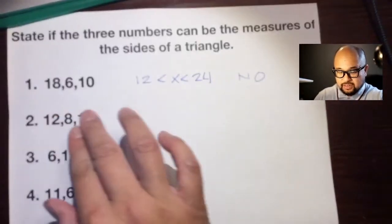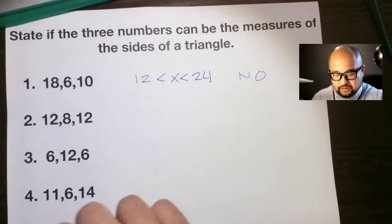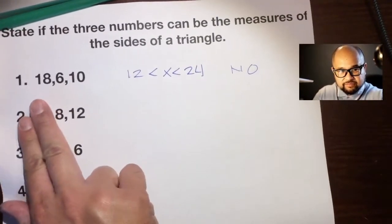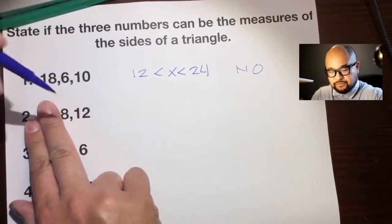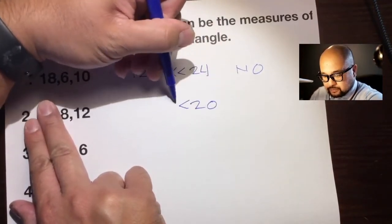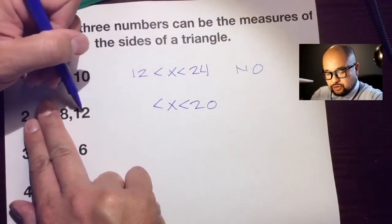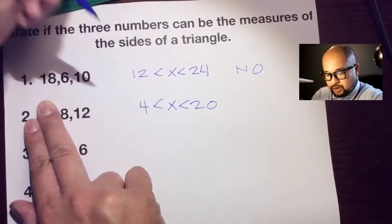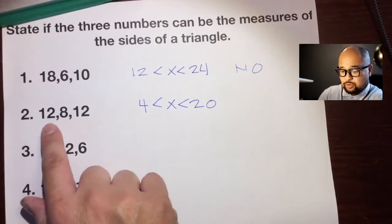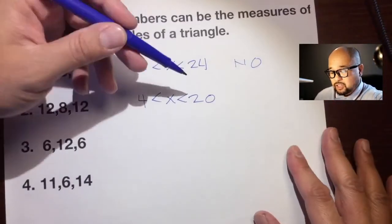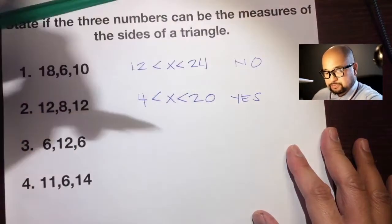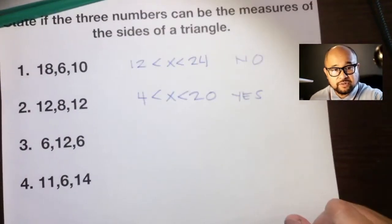You can ignore any of these three numbers. Let's ignore the 12 and focus on 8 and 12. Eight plus 12 is 20, and 12 minus 8 is 4. Is 12 in between 4 and 20? Yes. So this would be a triangle — these three sides can create a triangle.